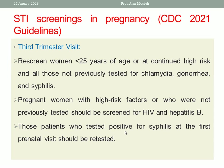At the third trimester visit, at 36 weeks gestational age or below, rescreen women less than 25 years of age or at continued high risk, and also those not previously tested for chlamydia, gonorrhea, and syphilis. Pregnant women with high risk factors or who were not previously tested should be screened for HIV and hepatitis B. If a woman presents for the first time and didn't do the test early in pregnancy, do it right now — test for HIV, hepatitis B and C. Those who tested positive for syphilis at the first prenatal visit should be retested.